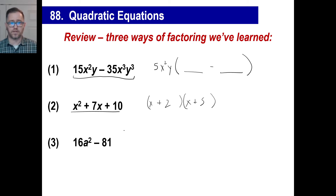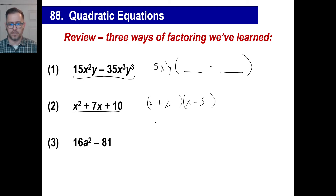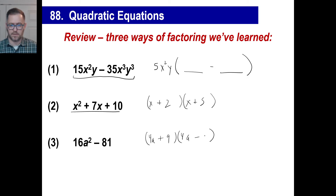The third type of factoring is what we call the difference of two squares. These are two squares: 16 is a square of 4, A squared is the square of A, 81 is the square of 9. That is a difference because there's a minus sign. The square root of 16 is 4, the square root of A squared is A, and I'm going to have a plus here and a minus there. And the square root of 81 is 9. There is my answer.